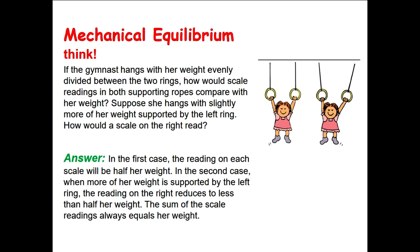For the second picture, suppose she hangs with slightly more of her weight supported by the left ring. In that case, the reading of the right rope will reduce — it will be a little less than half her weight. Of course, the sum of the two readings should still equal her weight.